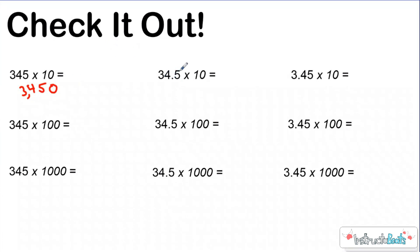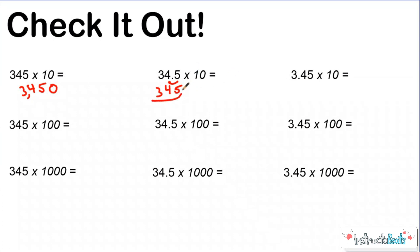Same thing if I'm multiplying thirty-four and five tenths times ten. If I'm getting bigger times ten, I'm really just moving one place value to the left. So I can put my three in the hundreds place, my four in the tens place, and then my five would go from the tens all the way to the ones place. So thirty-four and five tenths times ten is really three hundred forty-five.